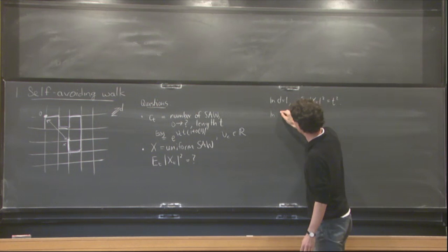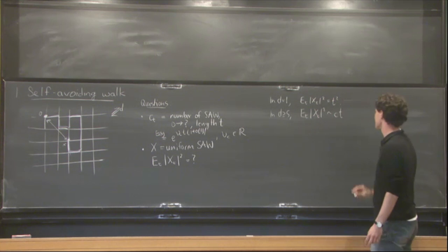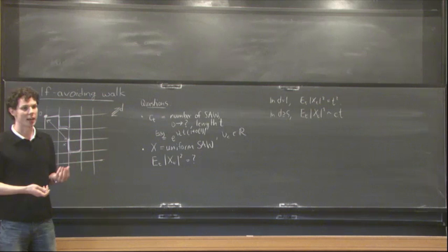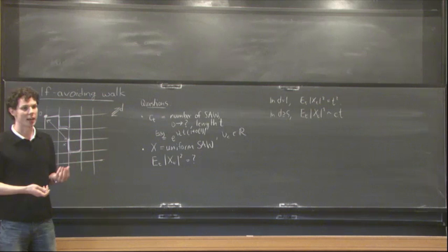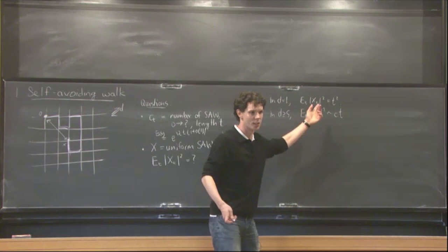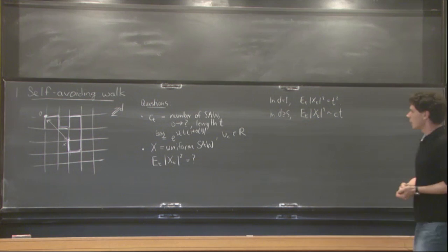Now, if you are in dimensions five and more, it is known that the squared end-to-end distance is asymptotic to a constant times t. This is possible for the following reason. This is, in fact, the behavior of a simple random walk, that's one that's allowed to intersect. And it's also known that in dimensions five and more, simple random walks typically only intersect finitely often. So it's not too surprising that the self-avoiding walk behaves like the simple random walk. But this is a theorem, and it's not easy. It's a theorem due to Bridges and Spencer and Harrod Slate, essentially.